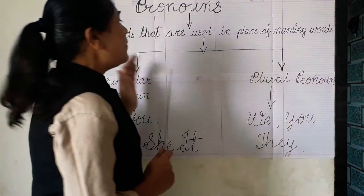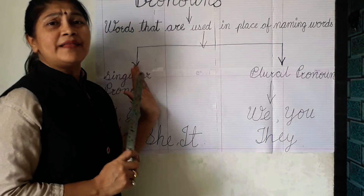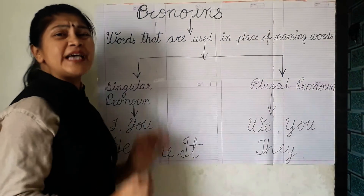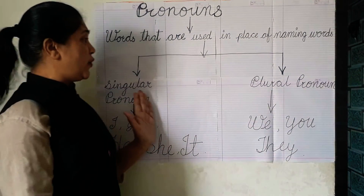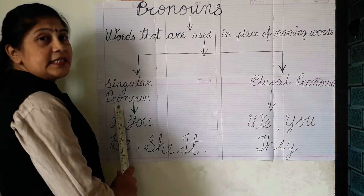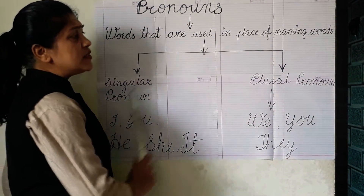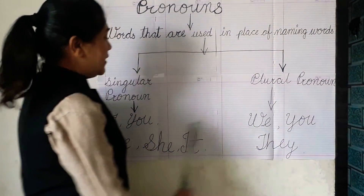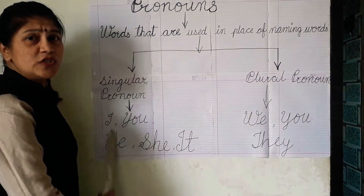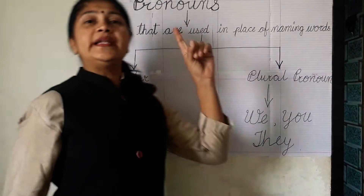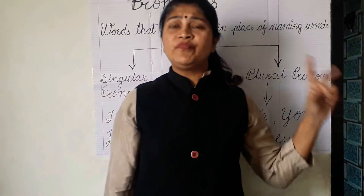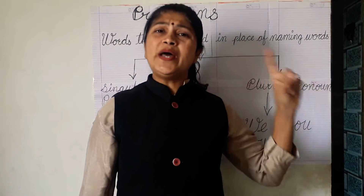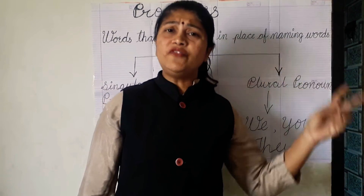How many pronouns are there? There are two types of pronouns: singular pronouns and plural pronouns. Singular pronouns means only one thing — one person, one man, one woman.